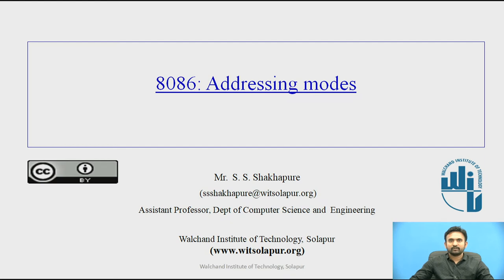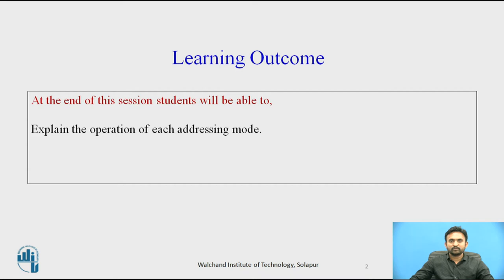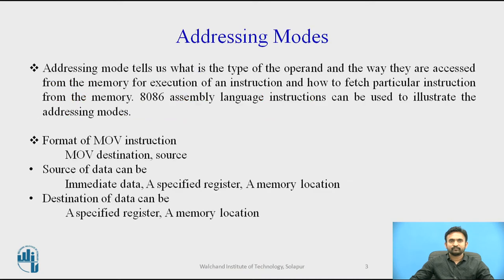Welcome to the session on 8086 addressing modes. At the end of this session, students will be able to explain the operation of each addressing mode. The way of specifying data to be operated by an instruction is known as addressing mode. This specifies that the given data is an immediate data or an address. It also specifies whether the given operand is a register or register pair. Addressing mode tells us the type of the operand and the way they are accessed from memory for execution of an instruction.